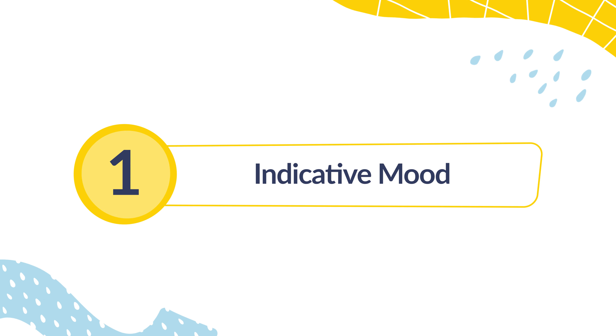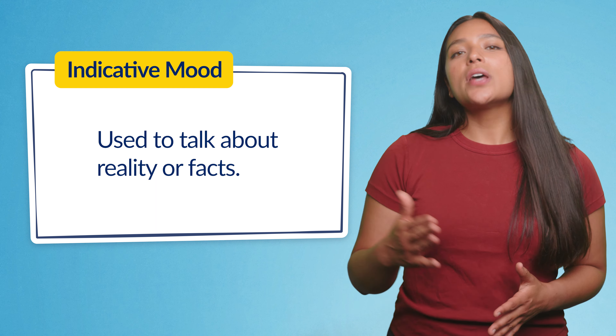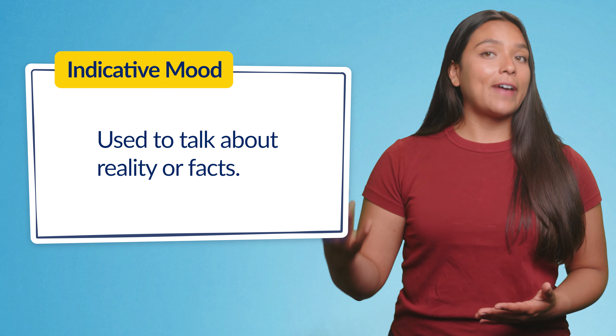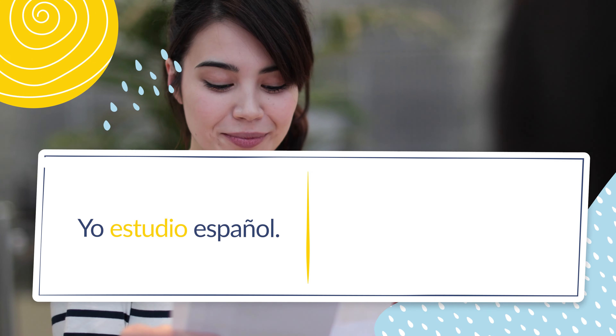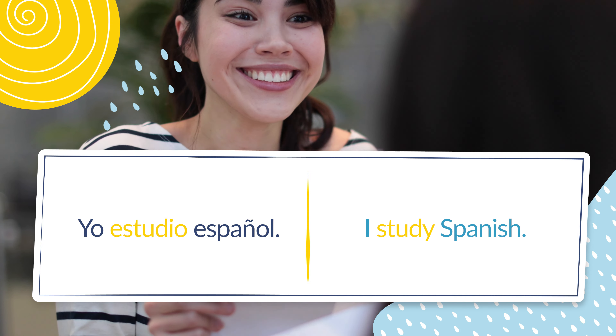I know, all of this info may sound overwhelming, but I'm going to break it down in very simple terms here. So, without further delay, let's begin. We'll start off with a very common one, the indicative mood. This mood is used to talk about reality or facts. Using the indicative mood, we can talk about and describe actions at the moment they occur, whether it's the past, present, or future. An example sentence of the indicative mood would be, yo estudio español — I study Spanish.